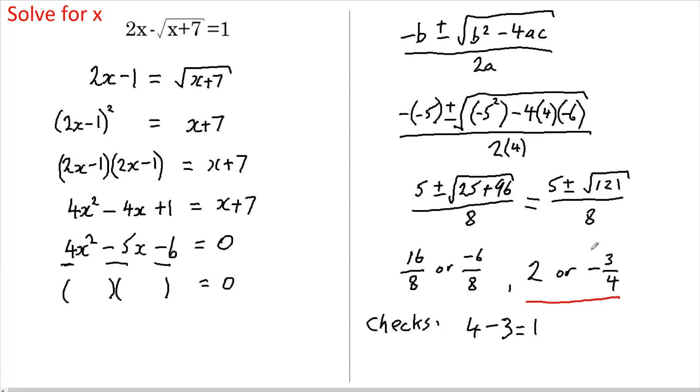Now let's substitute in negative 3 quarters. We've got 2 lots of negative 3 quarters, which is negative 1 and a half. Less the square root of 7 minus 3 quarters, which is 6 and a quarter. The square root of 6 and a quarter is 2 and a half. So this becomes negative 1 and a half less 2 and a half.